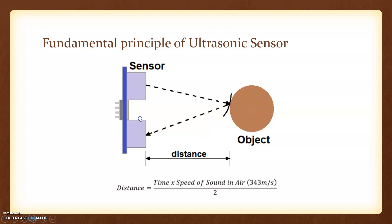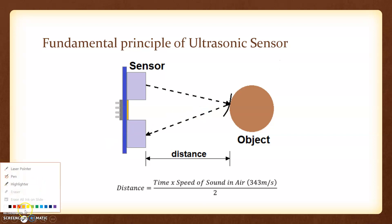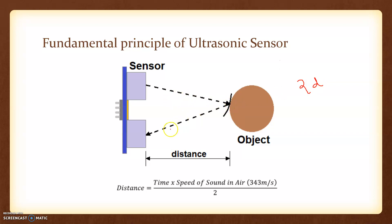Now you may think: how can the distance between the sensor and object be detected? This principle is also used in radar signal processing. When we are sending the signal from the transmitter and it is coming back — if the distance between the sensor and the object is d, then the signal going from sensor to object and coming back is covering basically 2d distance.